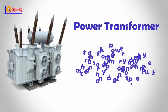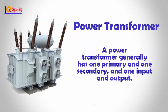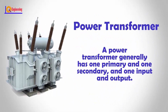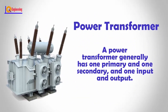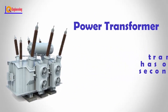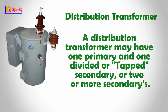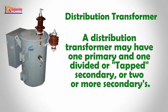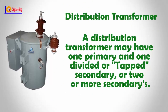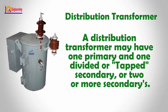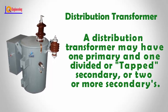A power transformer generally has one primary and one secondary — one input and one output. A distribution transformer may have one primary and one divided or tapped secondary, or two or more secondaries.